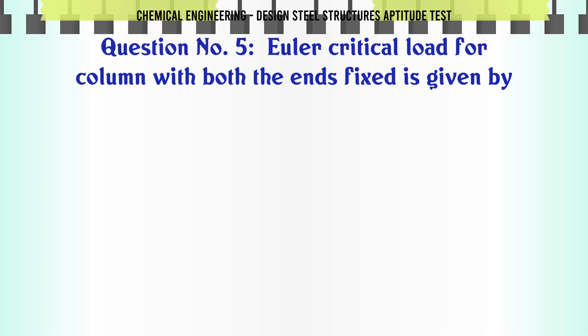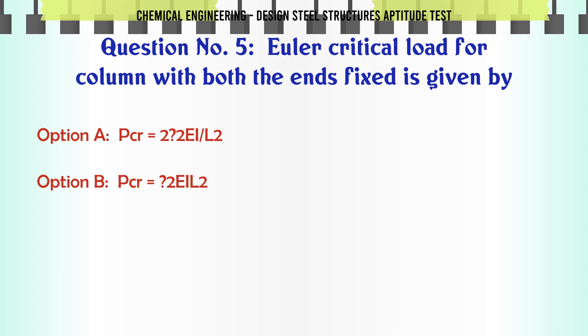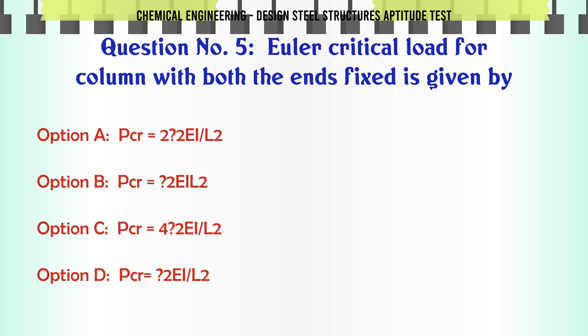Euler critical load for column with both the ends fixed is given by: A. PCR = π²EI/L². B. PCR = 2π²EI/L². C. PCR = 4π²EI/L². D. PCR = 2πEI/L².